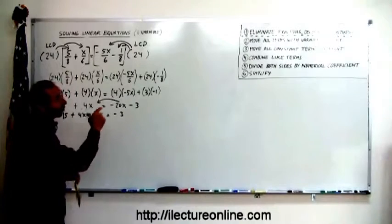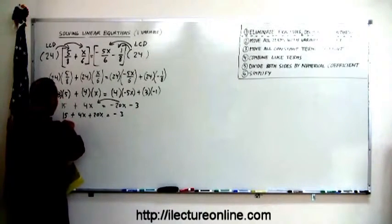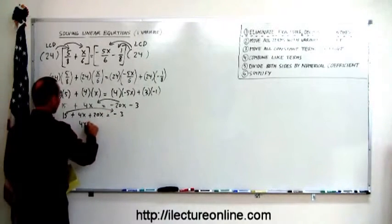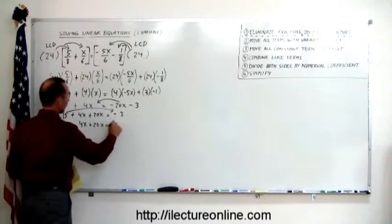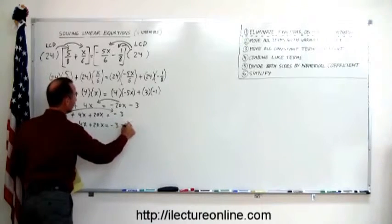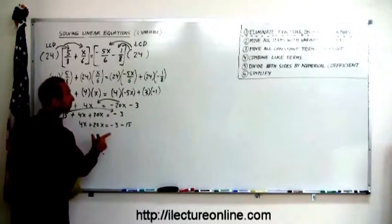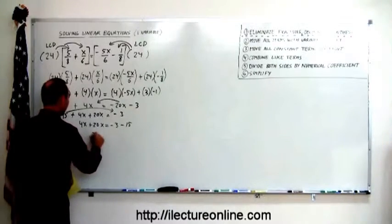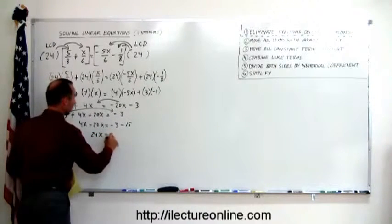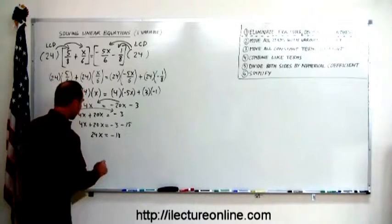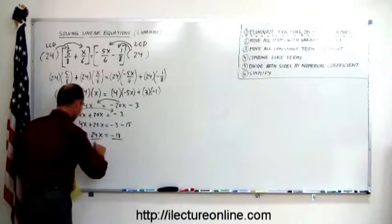Then the next step says move all the constant terms to the right. So I still have a 15 on the left that has to move to the right. So we have 4x plus 20x equals minus 3 minus 15. Then it says combine all like terms, so this becomes 24x and this becomes minus 18. Next step is divide both sides by the numerical coefficient, divide both sides by 24.